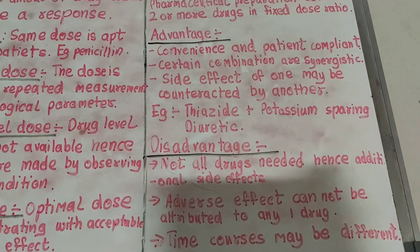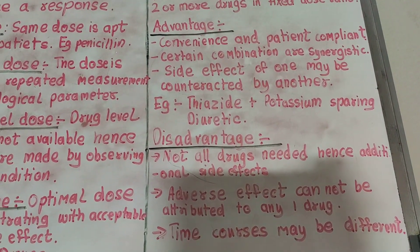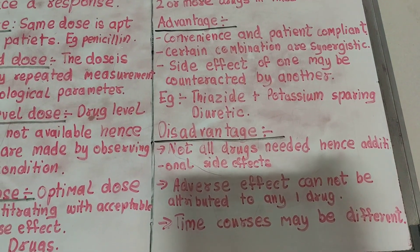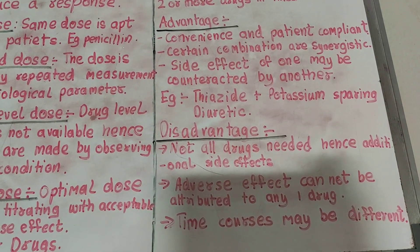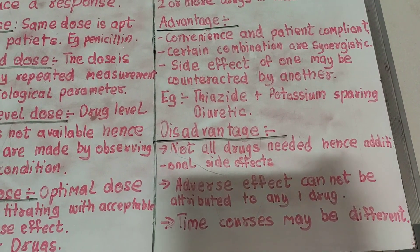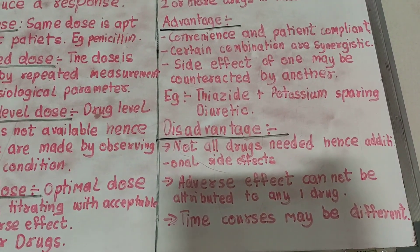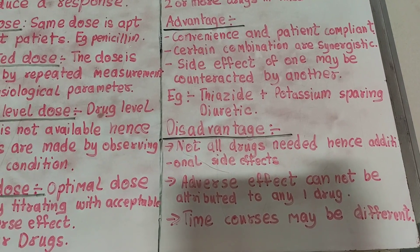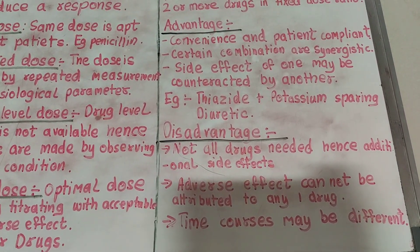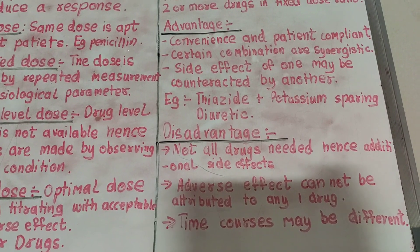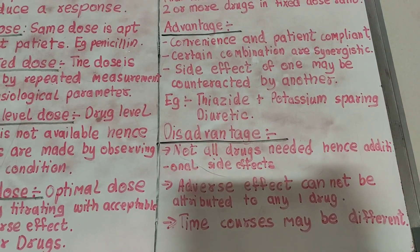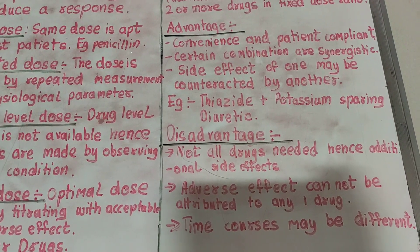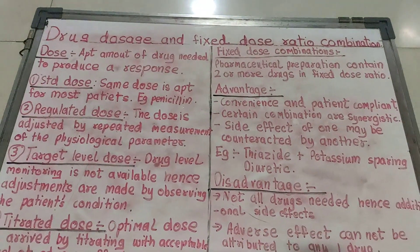Every coin has two sides, so with advantages there are disadvantages also. Not all drugs in the combination may be needed, so some side effects are additional and cannot be nullified. An adverse effect that occurs cannot be attributed to any one particular drug but to the full medication, so the offending drug has to be identified and corrected or additional medicine given. The time courses of the drugs may also be different.